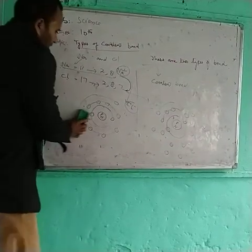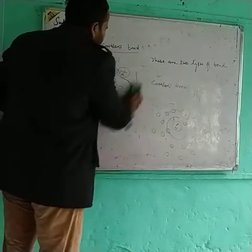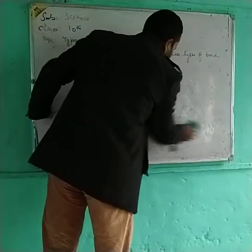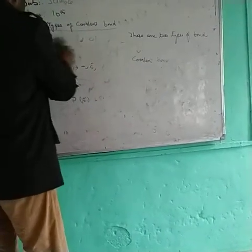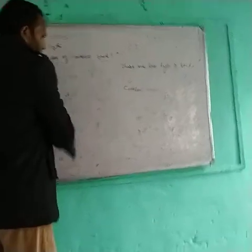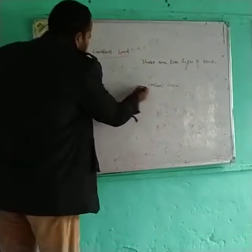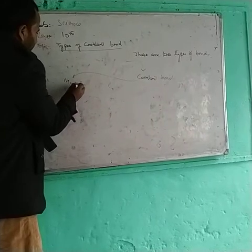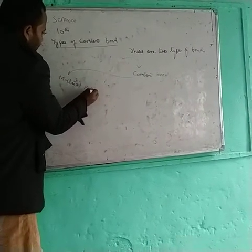Now, moving on to covalent bonds. There are three types of covalent bonds. In a covalent bond, mutual sharing of electrons takes place.